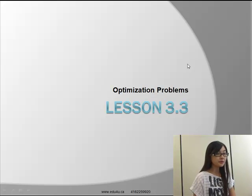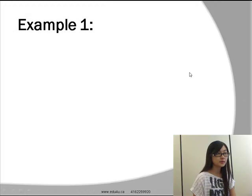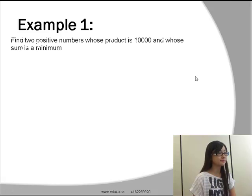Hi guys, this is lecture 3.3 and today we'll be talking about optimization problems. Let's go straight into example 1 from our learning resources. Find two positive numbers whose product is 10,000 and whose sum is a minimum.